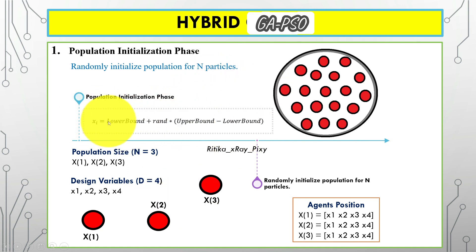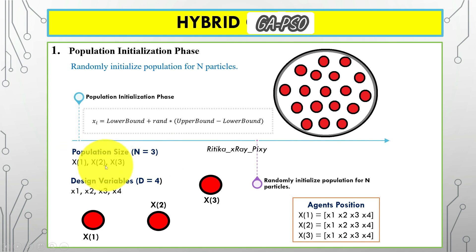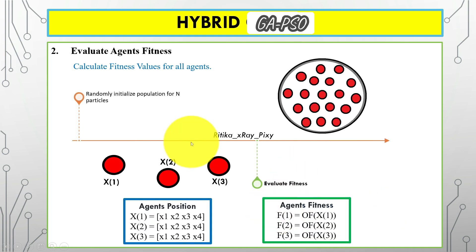To initialize positions for N agents in the search space, we use the initialization equation with lower bound, upper bound, and a random value. For example, suppose we have three agents: x1 denotes the position for the first agent, x2 for the second, and x3 for the third. With four design variables, we have dimension equal to four and three search agents.